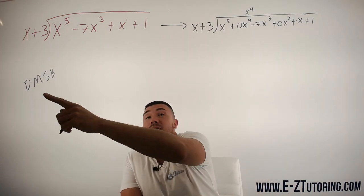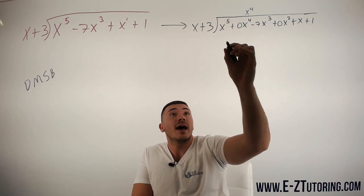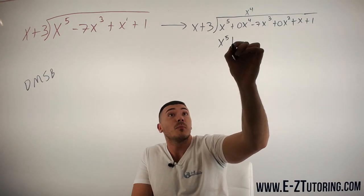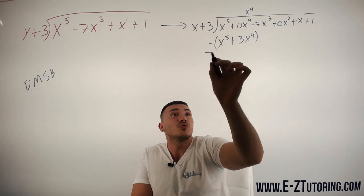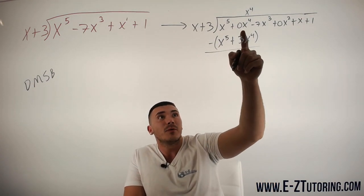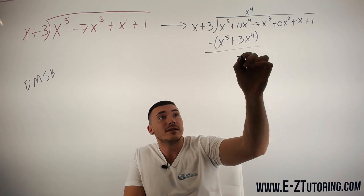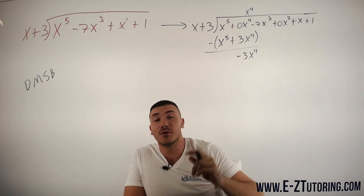Then we go ahead and we multiply x to the fourth into all that, and we get x to the fifth plus 3x to the fourth. Go ahead and subtract all of that. These cancel. Then we get 0 minus 3, it's negative 3x to the fourth.